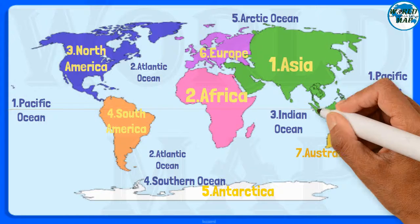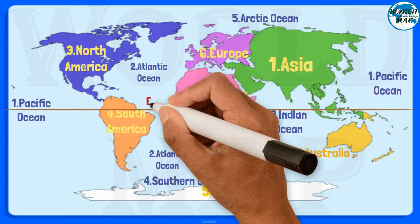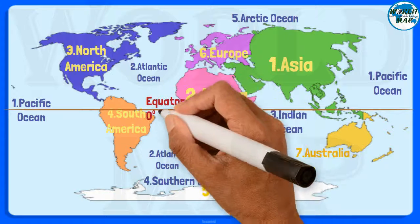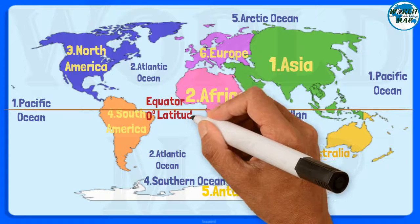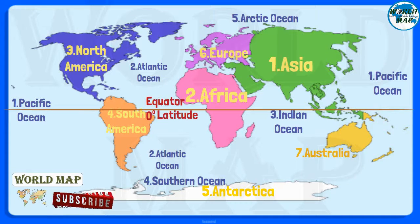Equator. The equator is a circle of latitude that divides a spheroid, such as Earth, into the northern and southern hemispheres. On Earth, the equator is an imaginary line located at zero degrees latitude, about 40,075 kilometers in circumference, halfway between the north and south poles.